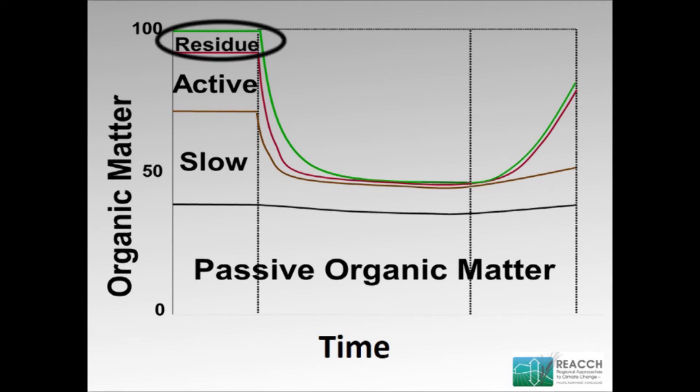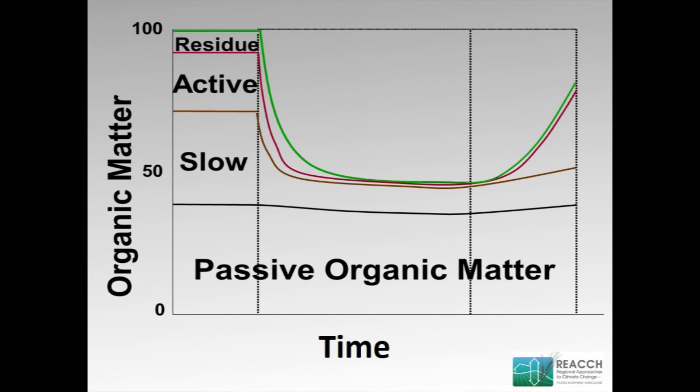Here we are at the beginning in our native situation, with the passive, slow, and active pools. After the advent of agriculture, much of the decline in organic matter — at least from a biological standpoint — happened in these active and slow-turning pools. This passive pool tended to remain more constant over time; it's more difficult to change, though this did happen because we have a history of soil erosion, and erosion physically moves this fraction to other locations in the field.